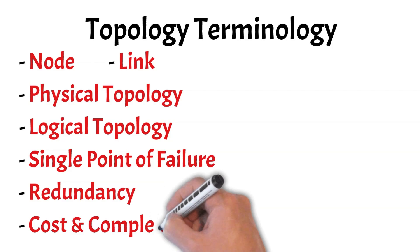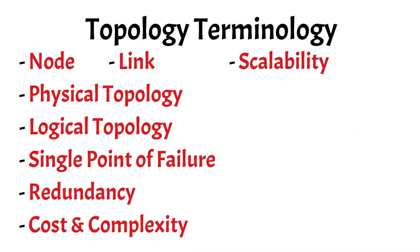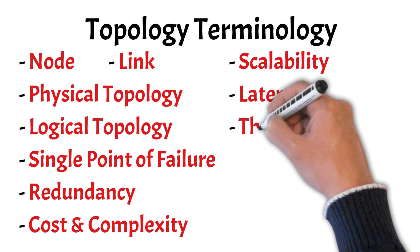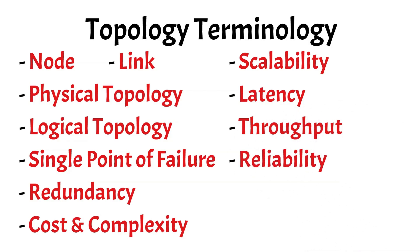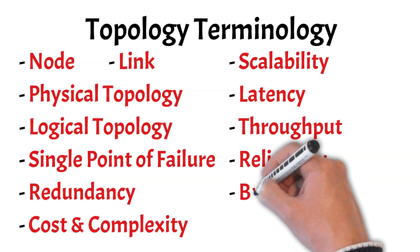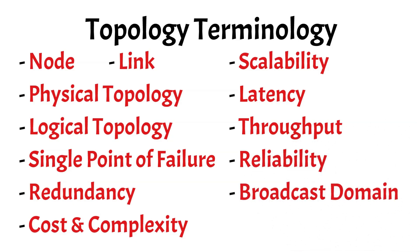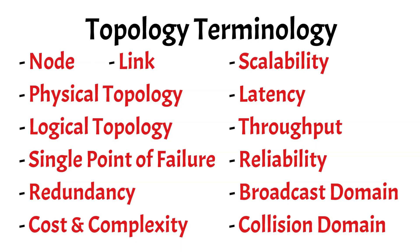Other important factors are cost and complexity of setup, scalability — or how easily the network can grow — and performance measures like latency and throughput, which represent the delay and data transfer rate respectively. A good topology should also provide reliability, keeping the network stable even under failures. The term broadcast domain refers to the area where broadcast traffic is shared, and collision domain is where data packets can collide on shared links. Being familiar with these concepts will make the upcoming topologies much easier to follow.